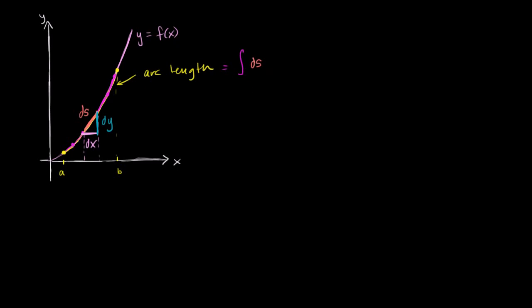So we can rewrite this. We could say this is the same thing as the integral of, instead of writing ds, I'm going to write it as the square root of dx squared plus dy squared. Once again, this is straight out of the Pythagorean theorem. Now this is starting to get interesting. I've written in terms of dx's and dy's, but they're getting squared, they're under a radical sign. What can I do to simplify this? Or at least write it in a way that I know how to integrate.